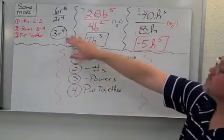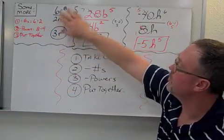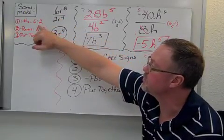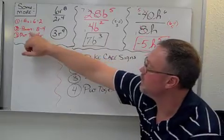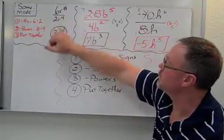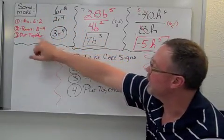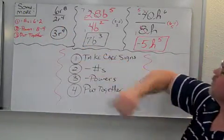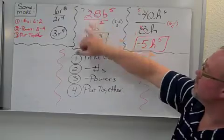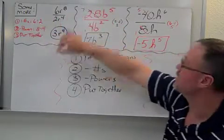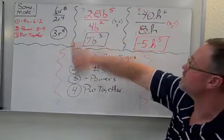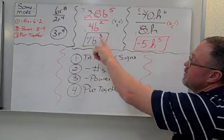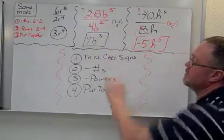Couple more. So we have 6r to the 8th, 2r to the 4th, so now I have coefficients, so I'm going to take and divide my coefficients first. That gives me 3. I'm going to take my powers, 8 minus 4 gives me 4, and when I put it all together, my common base is r. So my answer is 3r to the 4th. My other problem is, again, I'm going to reduce, and I can do this within here. So I can say that 4 goes into 28 seven times, so that gives me my 7. I'm going to subtract my powers, give me 3, and my base is letter b.